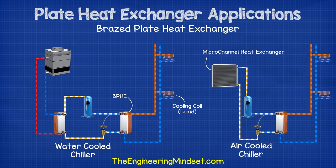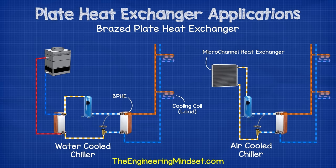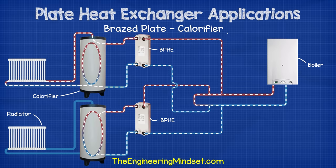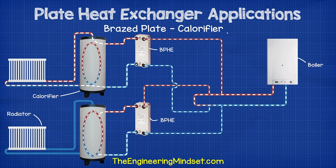Chillers have begun to be produced using brazed plate heat exchangers. On an air-cooled chiller, the evaporator can often be replaced with a brazed plate type, and in water-cooled chillers both the evaporator and condenser can be replaced with brazed plate type, depending on the size of the cooling load. Calorifiers and hot water tanks are also often indirectly connected to heating circuits through brazed plate heat exchangers, allowing instantaneous hot water or storage vessel draw depending on the building's demand.